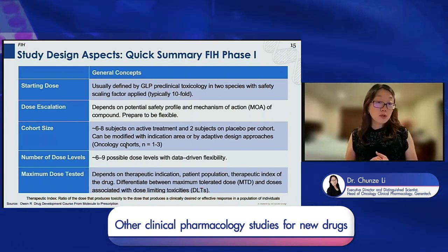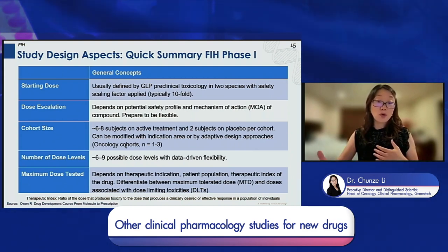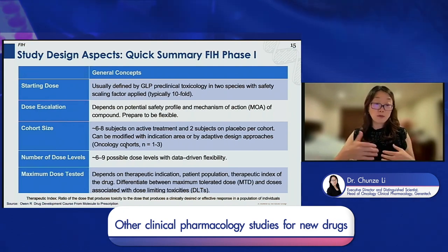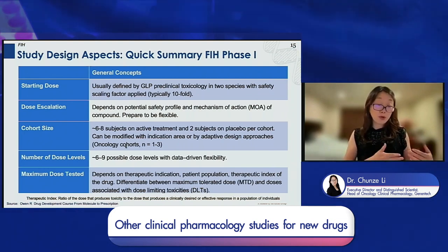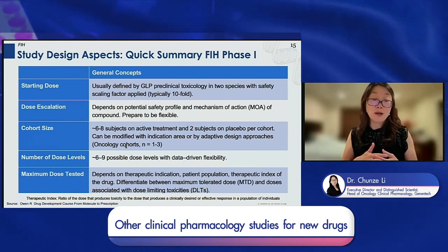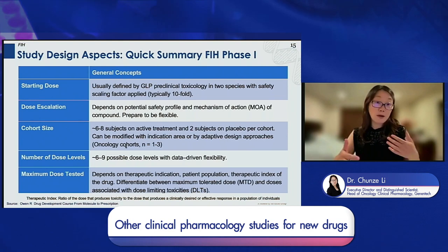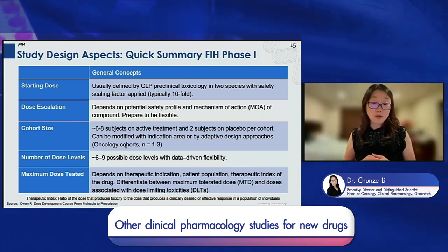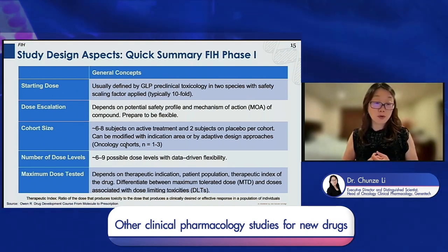For the number of dose levels, ideally we want to ensure the dose cohorts in the escalation range from five to nine possible dose levels. If you have too many dose levels, the study will be very long. If you have only one or two, your starting dose may be too high. You need to find the right sweet spot to understand the safety and PKPD relationship over the dose ranges.